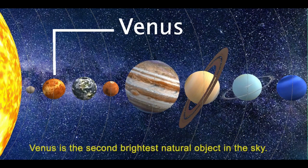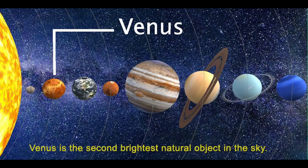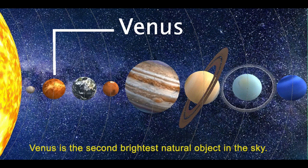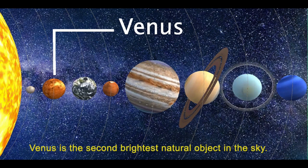Second is Venus. Venus is the second brightest natural object in the sky.